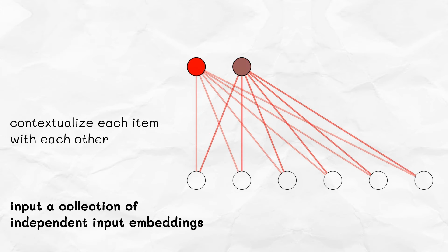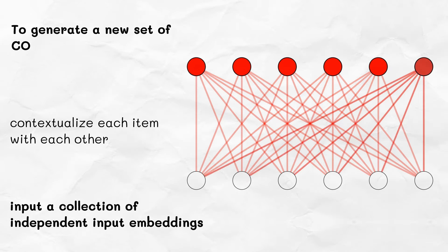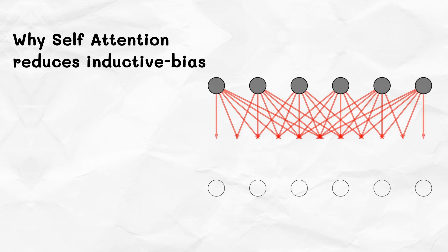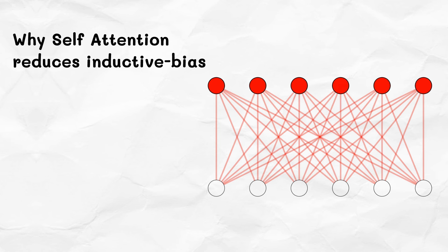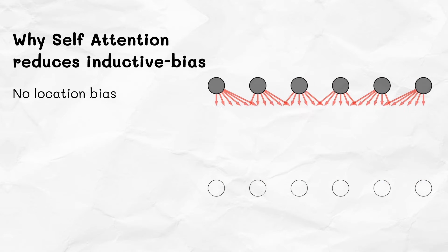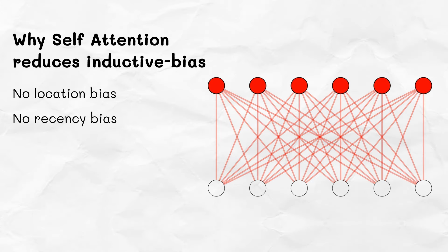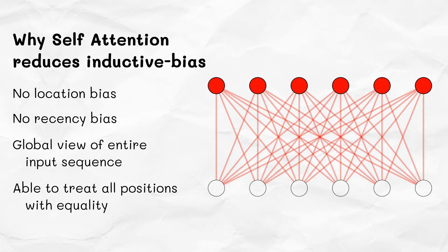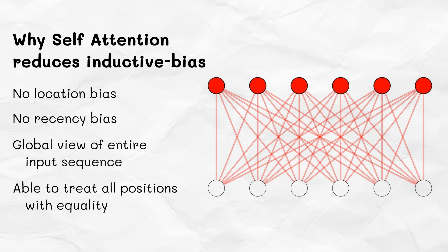The goal of self-attention is to input a collection of independent input embeddings and then contextualize each item with each other to generate a new set of contextual embeddings. Self-attention does not explicitly focus on a neighboring locality like CNNs, and unlike RNNs it doesn't impose a recency bias. It has a global view of the entire sequence and can access all positions simultaneously, treating everything with equal importance.